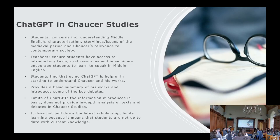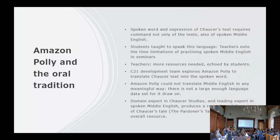Students argued that the information ChatGPT produces is rather basic. It does not provide in-depth analysis of texts and debates within academic literacies, and it doesn't pull down the latest scholarship — limiting learning to what was published quite some time ago. Another aspect of learning is beginning to speak and understand the rhythm of Middle English. Teachers noted the time limitations of practising spoken Middle English in class and the insecurity of beginning to say things. Teachers argued that more resources are needed, which was echoed by students.